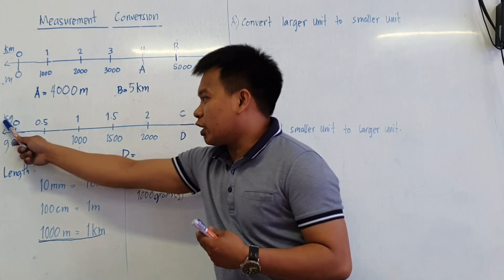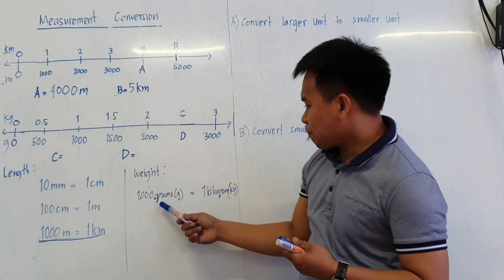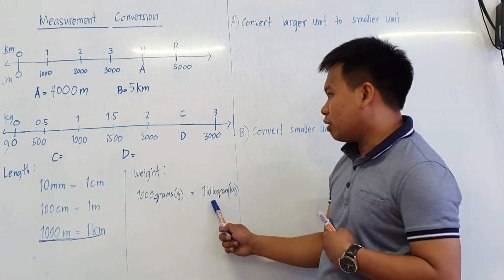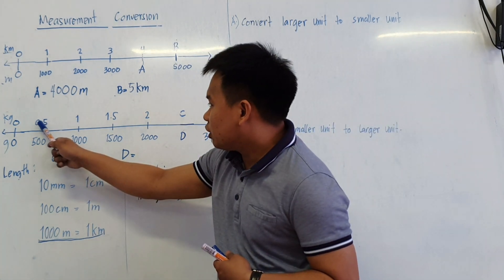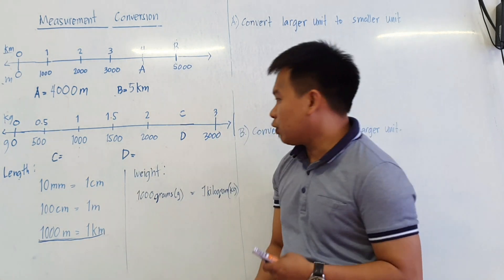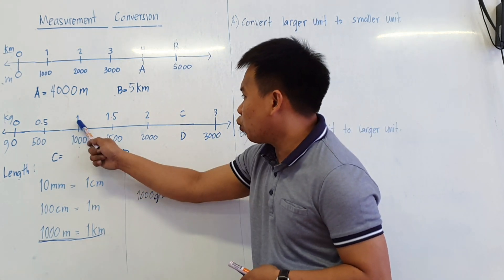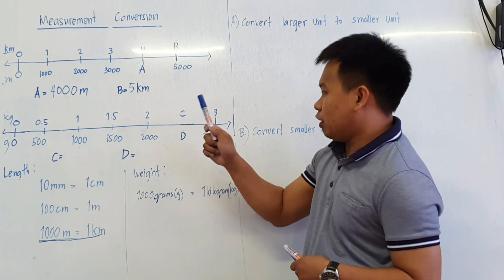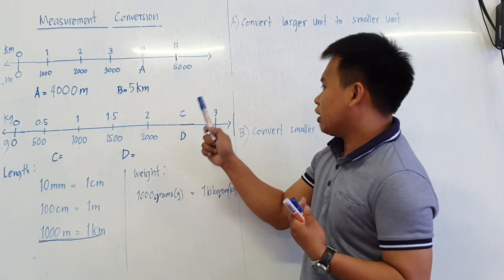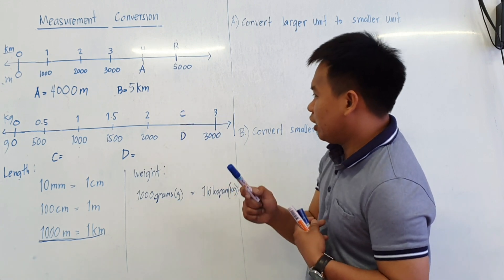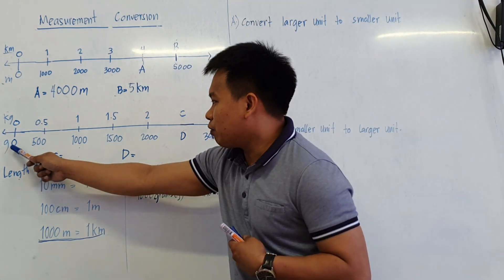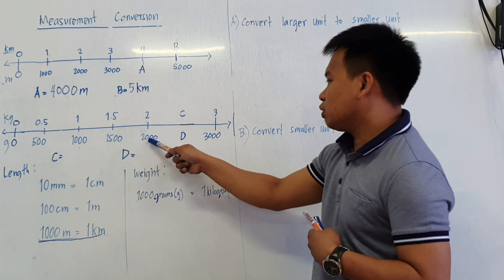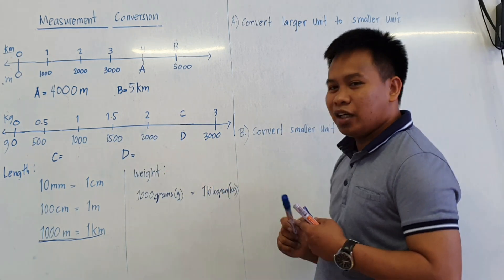For the kilograms, we have 1,000 grams equals 1 kilogram. Since the number line starts at 0.5, we go: 0.5, 1, 1.5, 2, then C, and 3. For the grams side, we have 0, 500, 1,000, 1,500, 2,000, and blank, and 3,000.